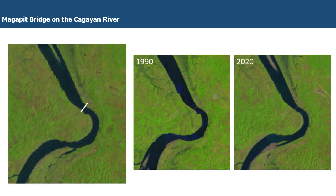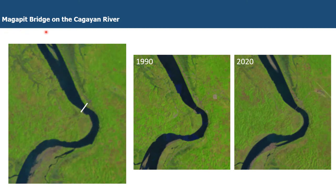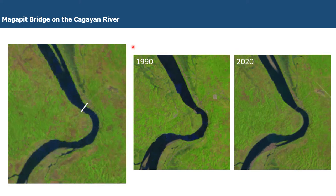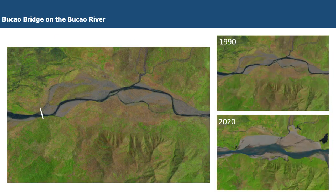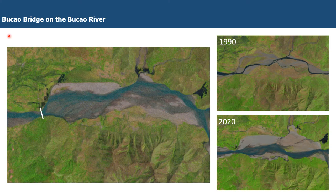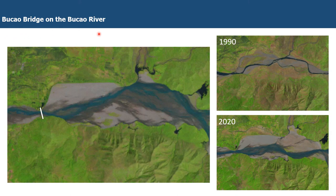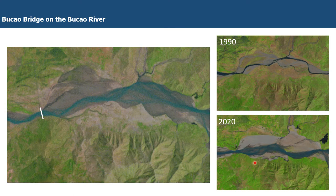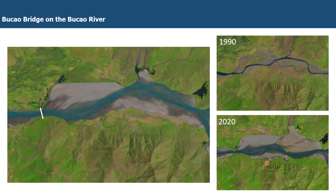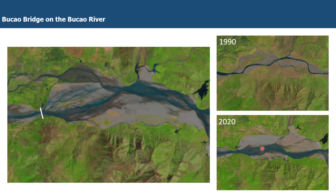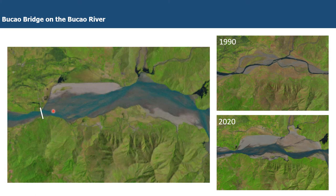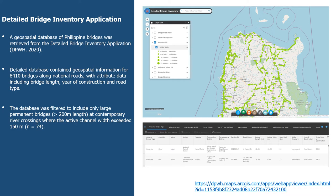Not all bridge sites behave the same way. The Magapit bridge on the Cagayan River over the same period from 1990 to 2020 shows very little difference in river morphology — lateral planform adjustments have been more limited. In contrast, the Bukau bridge on the Bukau River, just downstream of Mount Pinatubo, shows really widespread river expansion between 1990 and 2020. Associated with the volcanic eruption, large volumes of sediment entered the system, allowing for a significant increase in the active channel width.